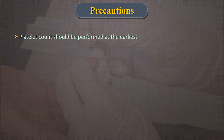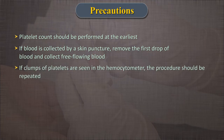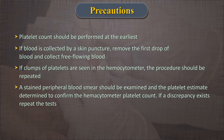Things to take care of to avoid error: 1. Platelet counts should be performed at the earliest. 2. If blood is collected by skin puncture, carefully remove the first drop of blood and collect the free-flowing blood for the platelet count — this will minimize platelet clumping and adhesion of platelets to the puncture site. 3. If clumps of platelets are seen in the hemocytometer, the procedure should be repeated. Clumps may be due to inadequate mixing of blood or poor technique in obtaining the specimen. 4. A stained peripheral blood smear should be examined and the platelet estimate determined to confirm the hemocytometer platelet count. The platelet estimate should correlate with the platelet count.